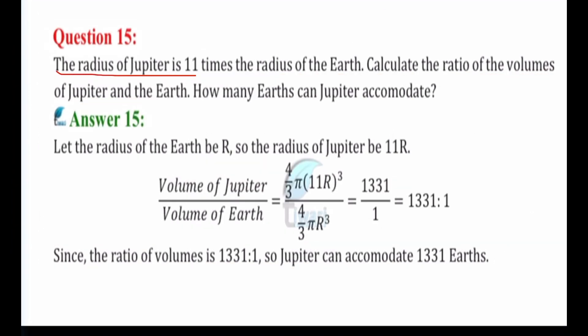Next is question number 15. The radius of Jupiter is 11 times the radius of the Earth. Calculate the ratio of the volume of Jupiter and the Earth. How many Earths can Jupiter accommodate? So Jupiter's radius is 11 times the radius of the Earth. So you can imagine how much larger Jupiter is when we compare it to Earth. You have to find out the ratio of Jupiter and Earth, and in the third part, how many Earths can Jupiter accommodate? Now let's see the answer.